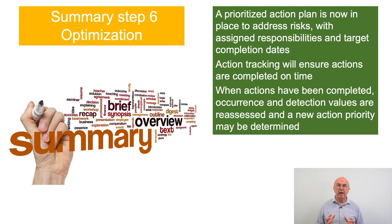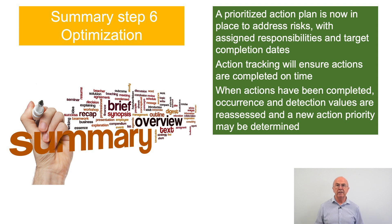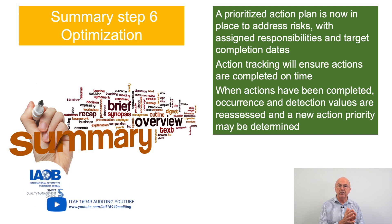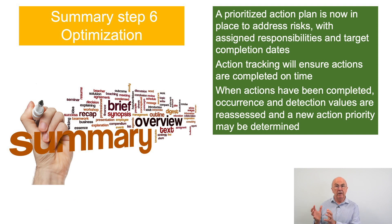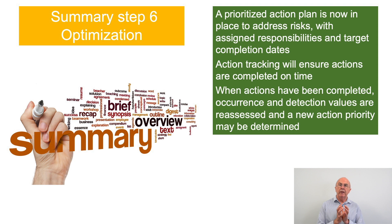To summarize step six optimization: we now have a prioritized action plan to address risk, with clearly assigned responsibilities and target completion dates. The team tracks to make sure actions are completed and implemented on time. Once implemented, we go back and re-score to come up with new action priority rankings. Remember, this is an ongoing improvement process — it doesn't stop here.